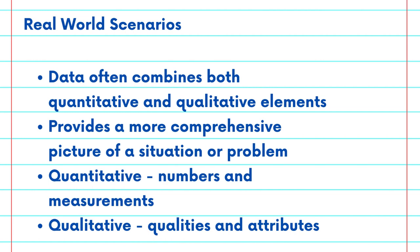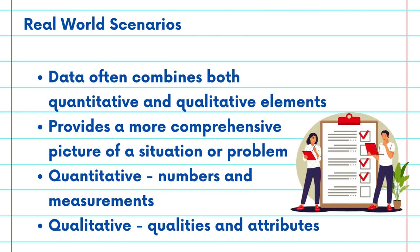For instance, in a survey, you might collect quantitative data about respondents' age and income, along with qualitative data about their opinions and preferences. Understanding the difference between these two data types is crucial for anyone working with data. Quantitative data deals with numbers and measurements, while qualitative data focuses on qualities and attributes.